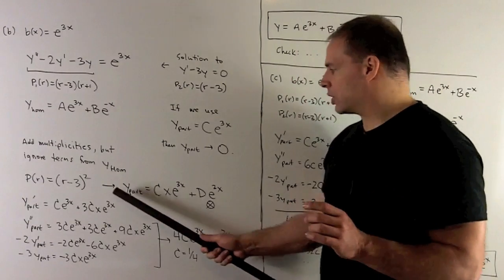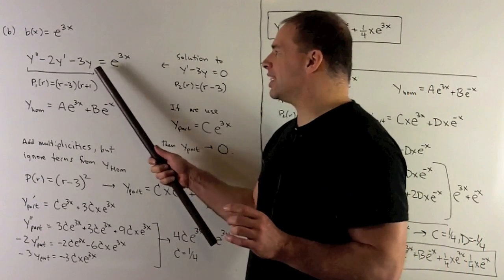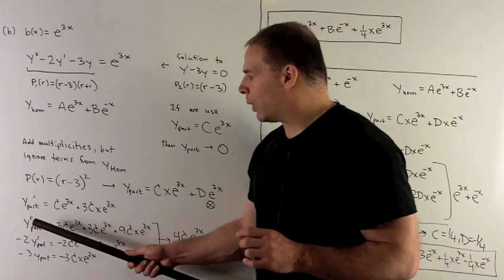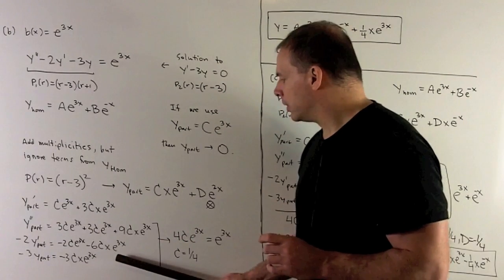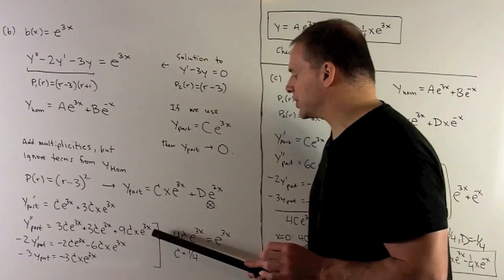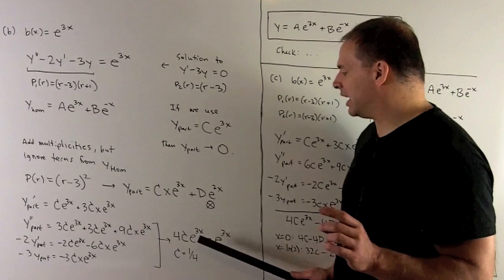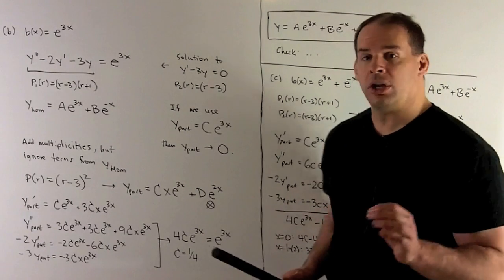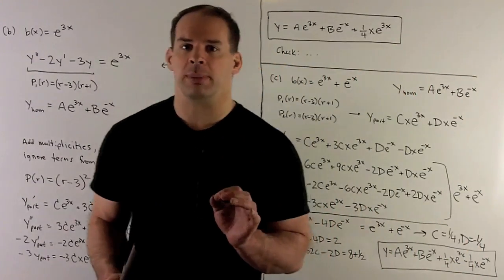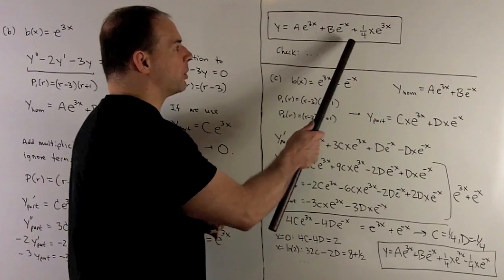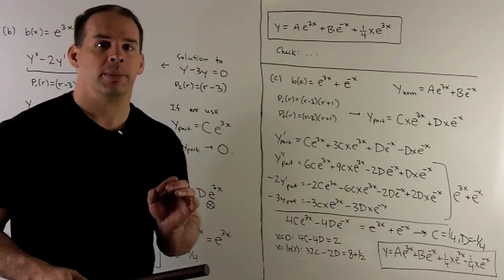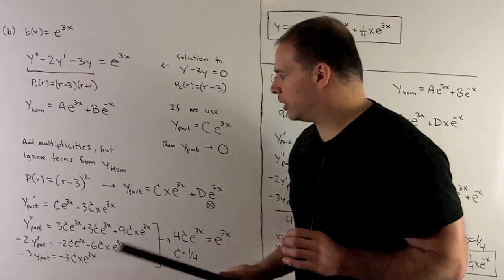We substitute y_p = c·x·e^(3x) into the equation, compute y' and y''. The x·e^(3x) terms cancel, leaving 4c·e^(3x) = e^(3x), so c = 1/4. The general solution is the homogeneous part plus 1/4·x·e^(3x).